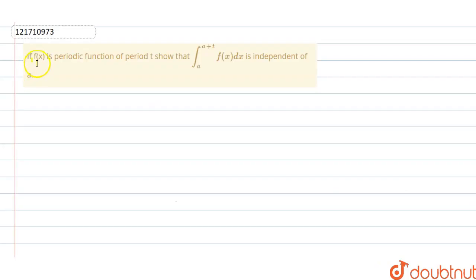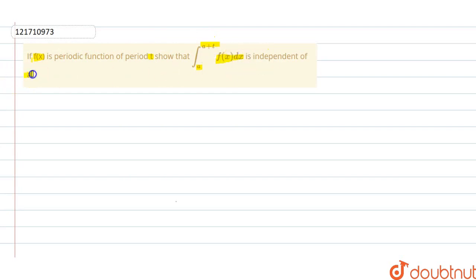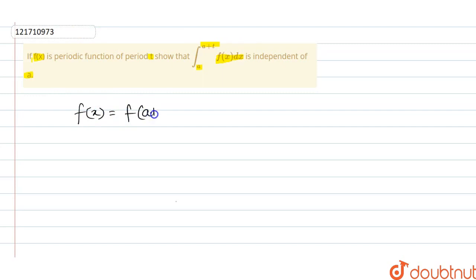Welcome guys. If f(x) is a periodic function of period T, show that the integration from a to a plus T of f(x) dx is independent of a. Okay guys? So I am going to tell you about the periodic function. The periodic function means f of a plus x.